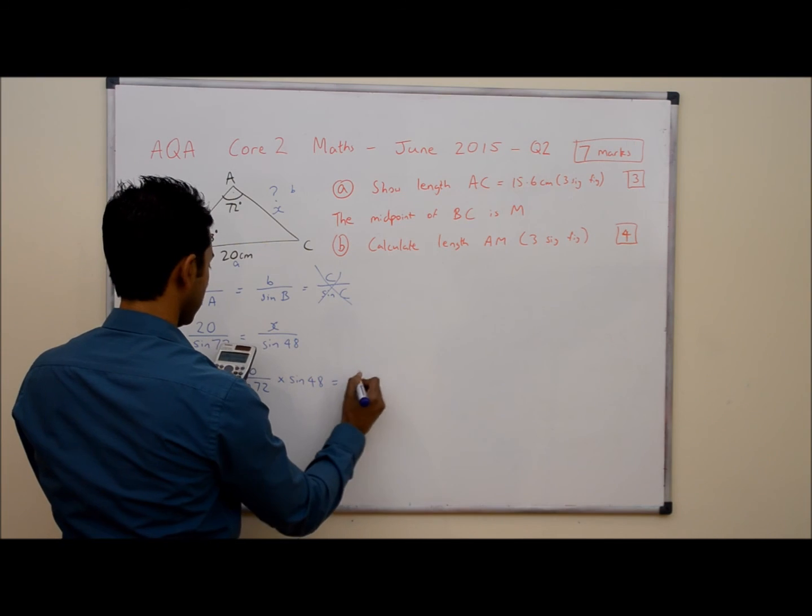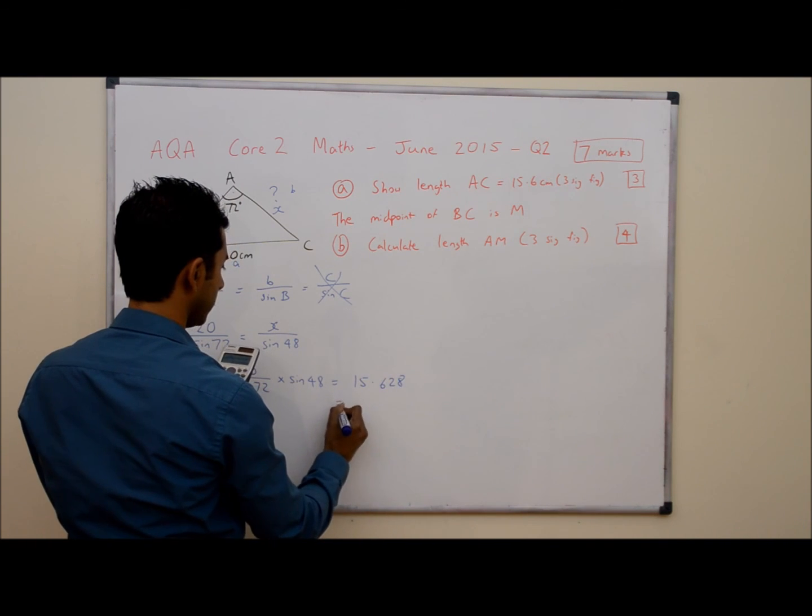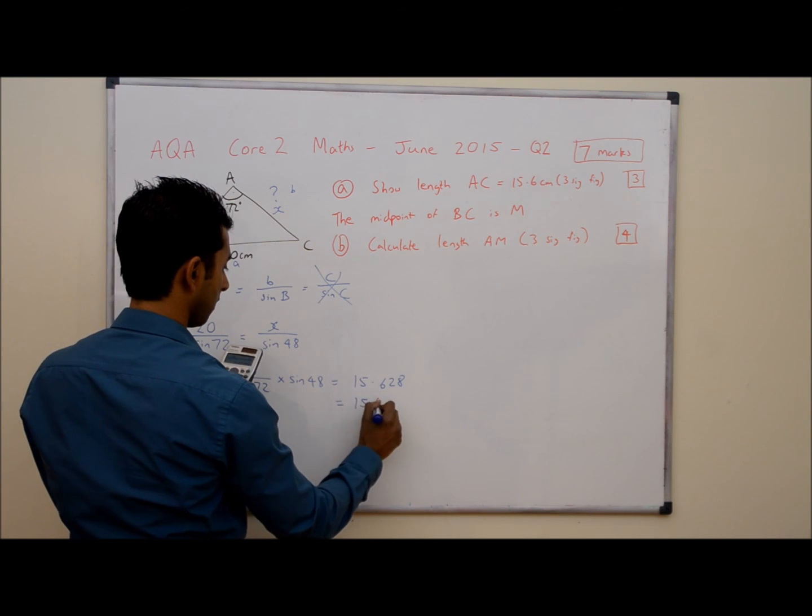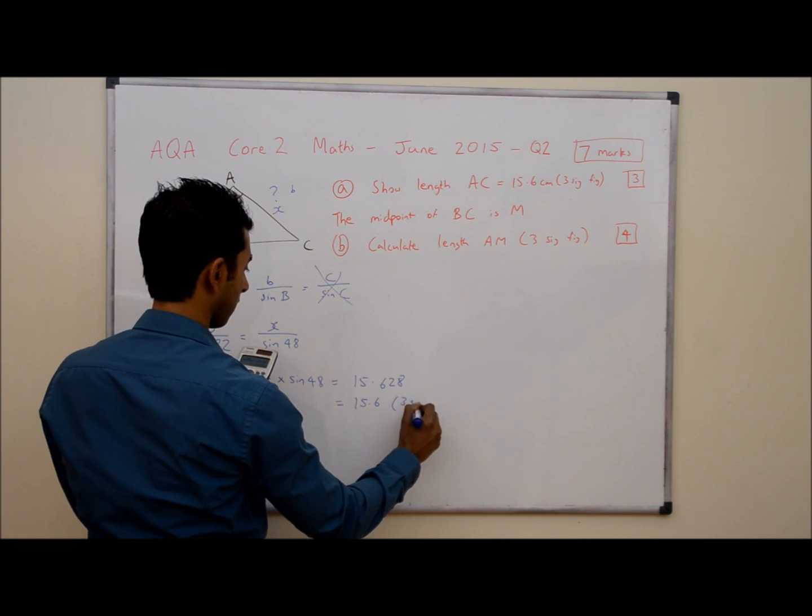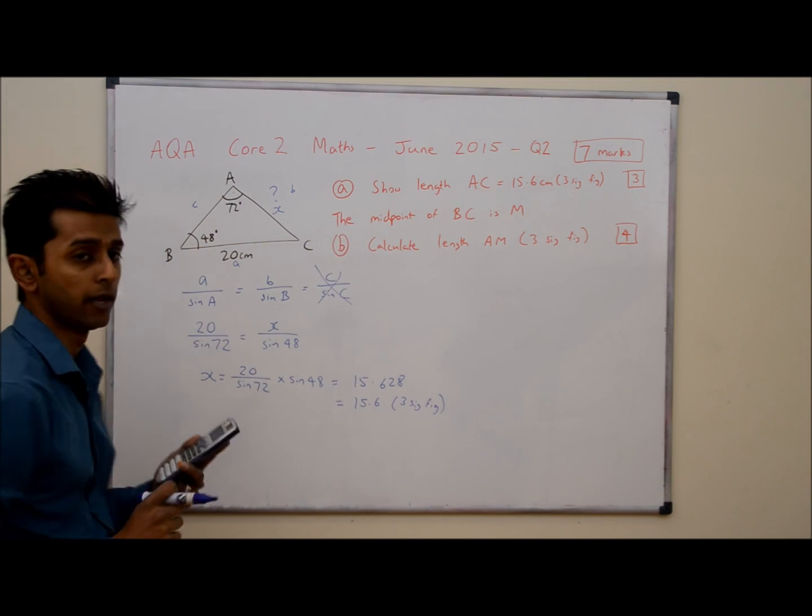The answer I'm getting is 15.628. If I want this to three significant figures that's going to be 15.6. Okay and I've managed to do part A correctly.